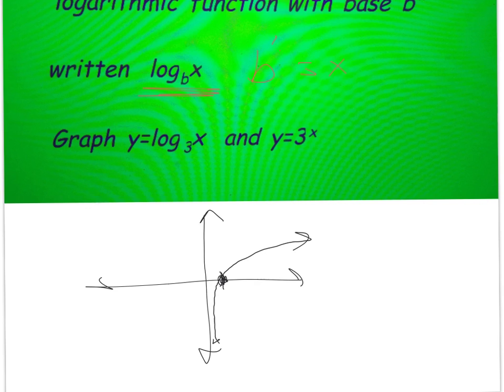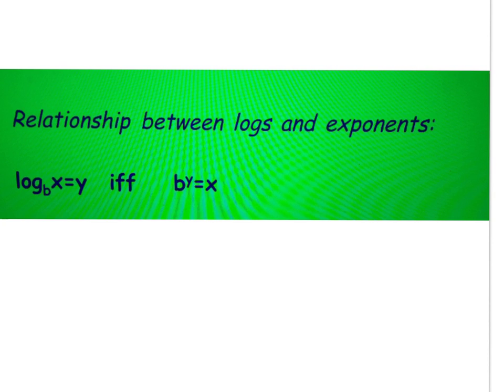Everything that was true yesterday is reversed today because they're inverses. Yesterday, the x-axis was an asymptote. Today, the y-axis is an asymptote. Yesterday it went through 0, 1. Today it goes through 1, 0. That's what your graph is going to look like unless there's some shifts and things in there.